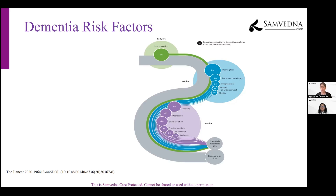Other midlife risk factors include traumatic brain injury — so head injury, stay safe, avoid falls. Hypertension is a very common lifestyle-related condition and there's a lot you can do to minimize that risk. Reducing alcohol consumption and addressing obesity are also very important. If you address these in midlife, it can delay your risk for developing dementia.